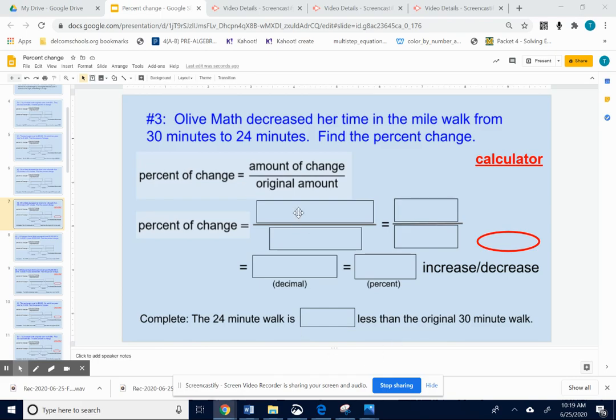And the original—I'm sorry, the amount of change would be taking 30 minus 24. You subtract. Okay, the original goes on the bottom.